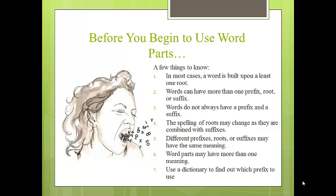Different prefixes, roots, or suffixes may have the same meaning. For example, the prefixes bi, di, and duo all mean two. Word parts may have more than one meaning. For example, 'ex' means former, as in ex-president, but it can also mean out or outside, as in exit.